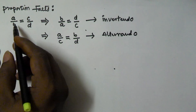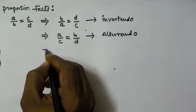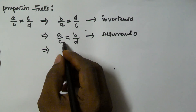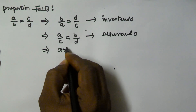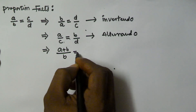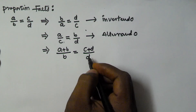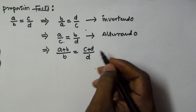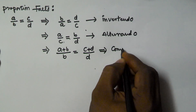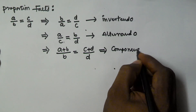If we have a proportion like A by B is equal to C by D, the same can also be represented as A plus B by B is equal to C plus D by D. So this is called as componendo.